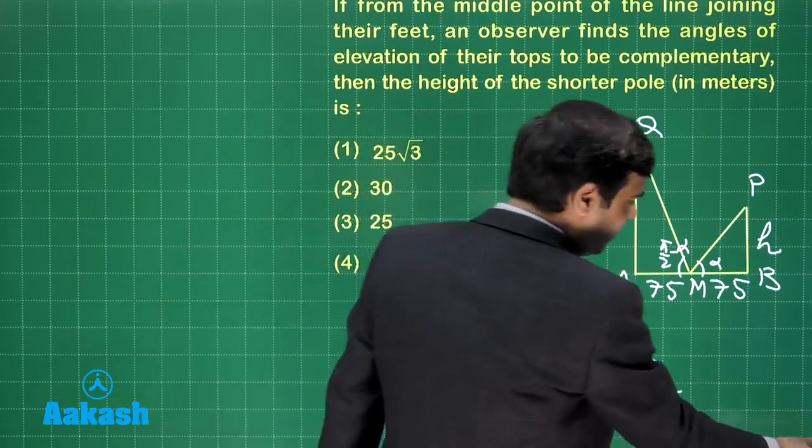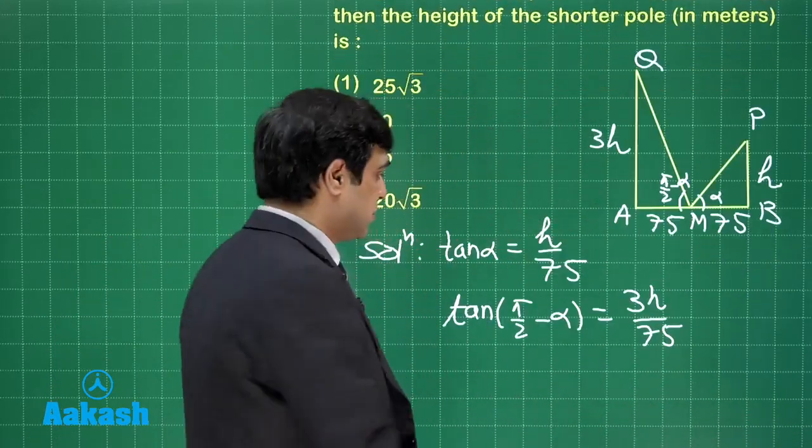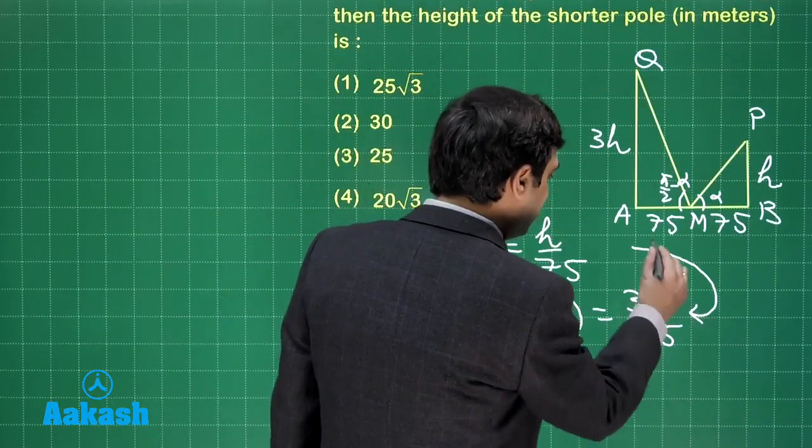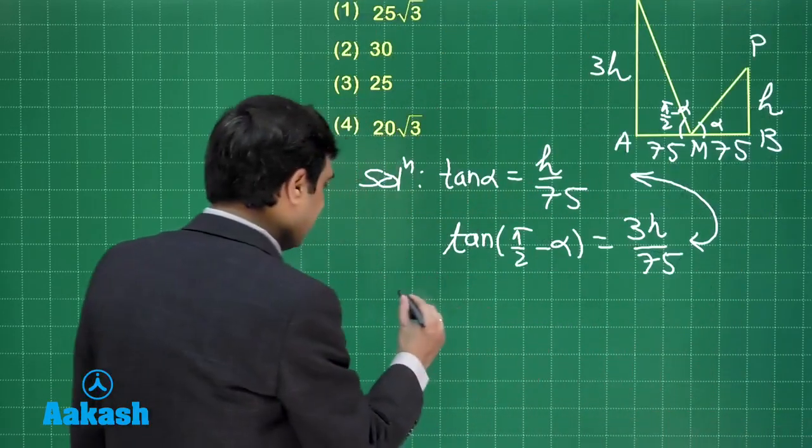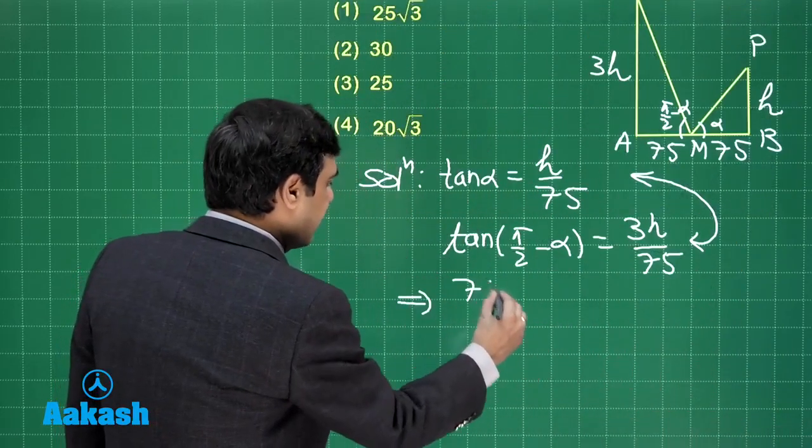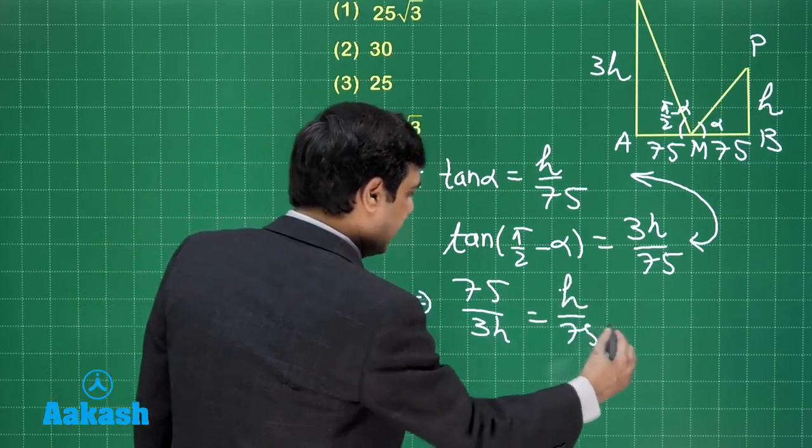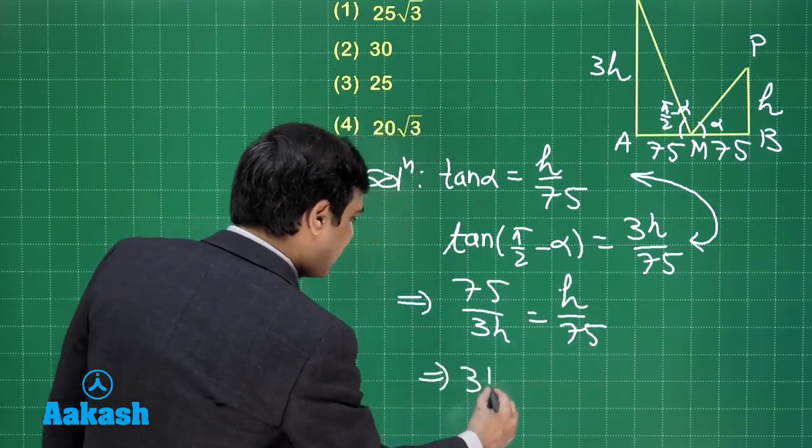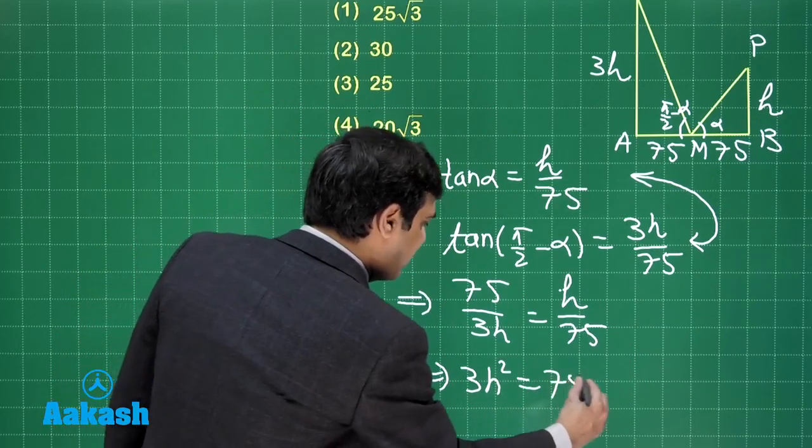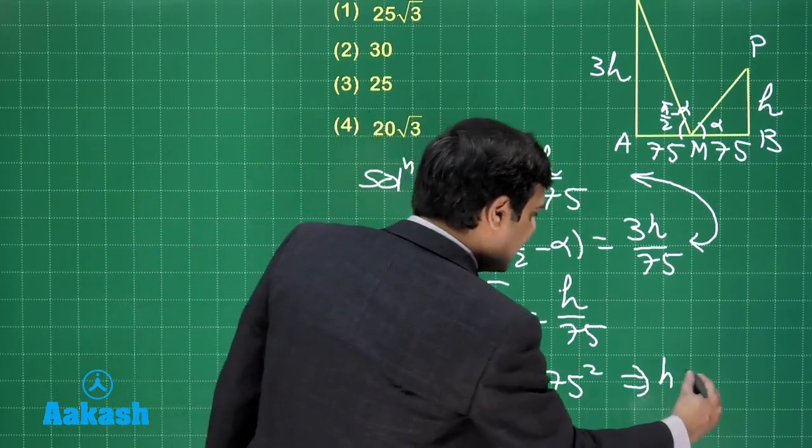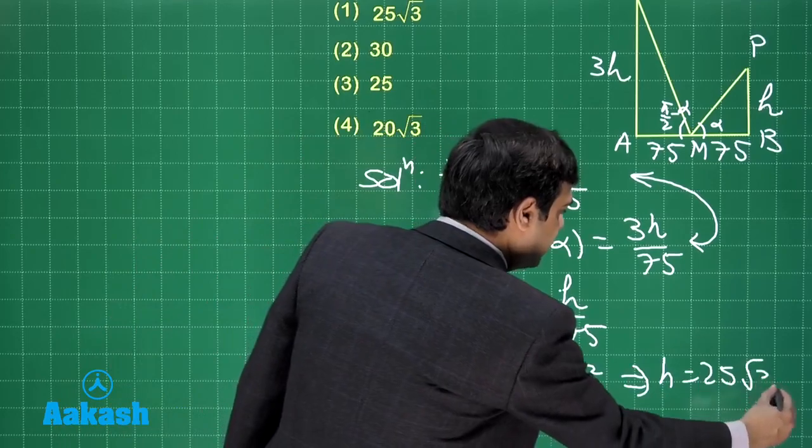Tan 90 minus alpha, that means cot alpha, correct. So just solve these two equations and you will be getting here 75 by 3h is equal to h by 75.